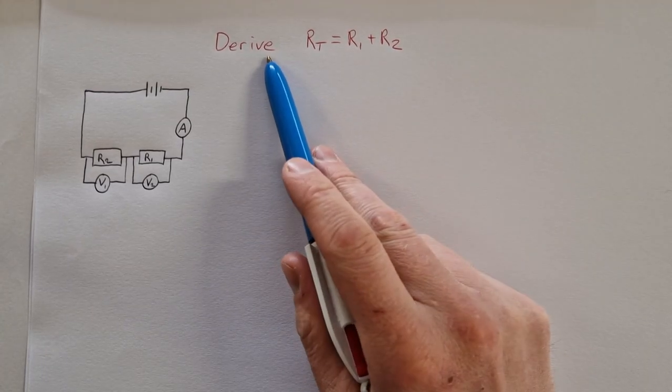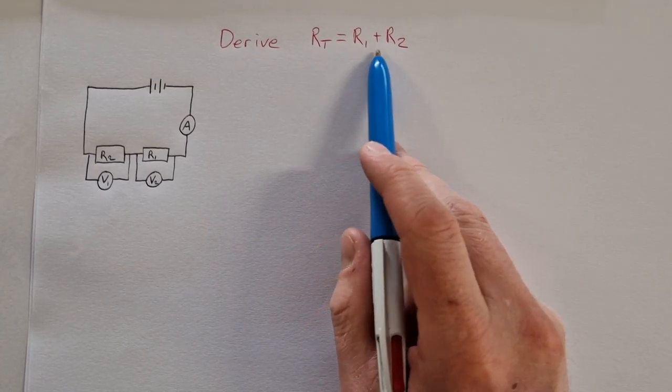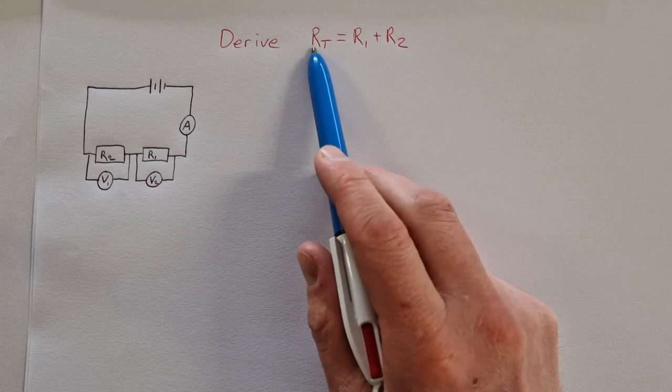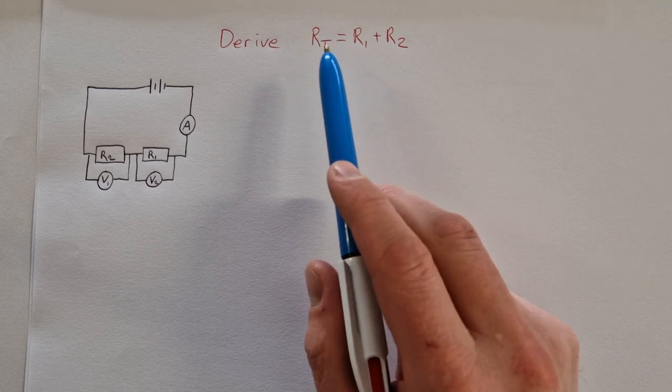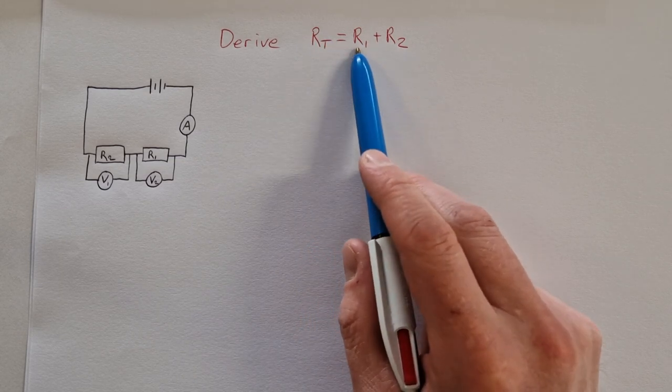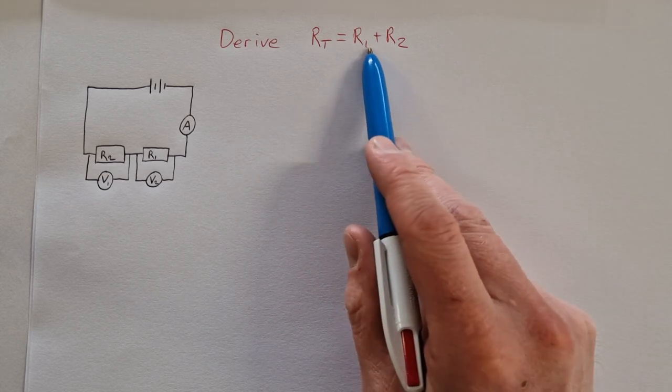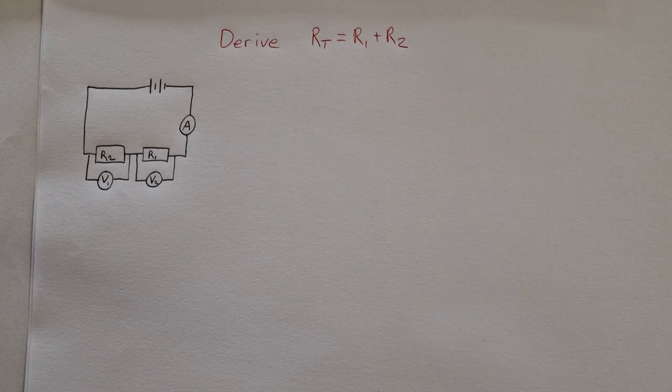In this video, we're going to derive the formula RT = R1 + R2, which shows that the total resistance of a circuit equals the sum of two or more resistors, so long as they are in series.